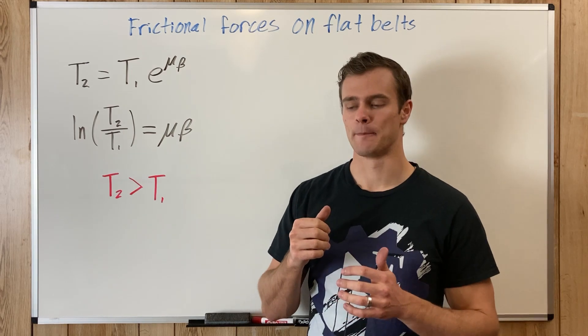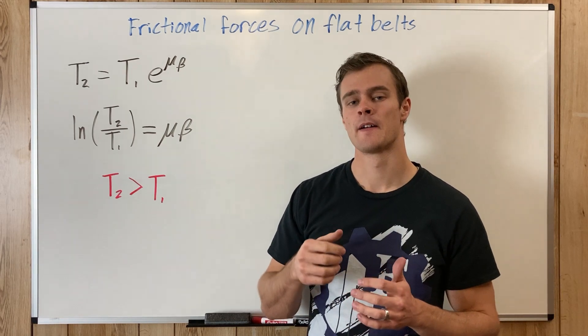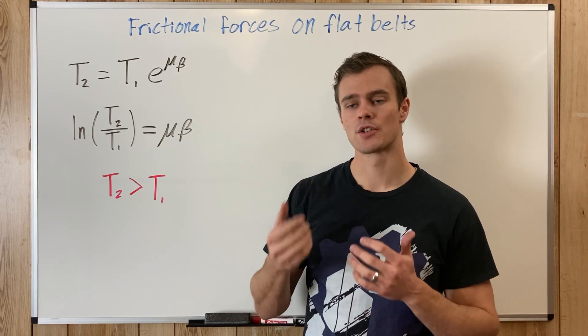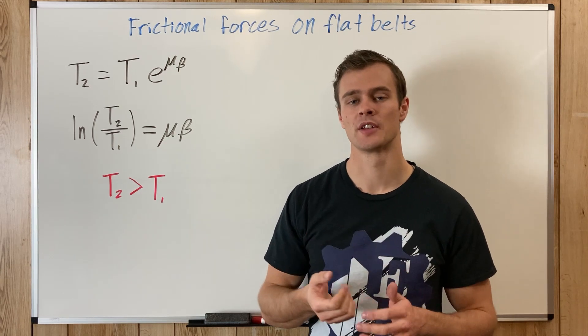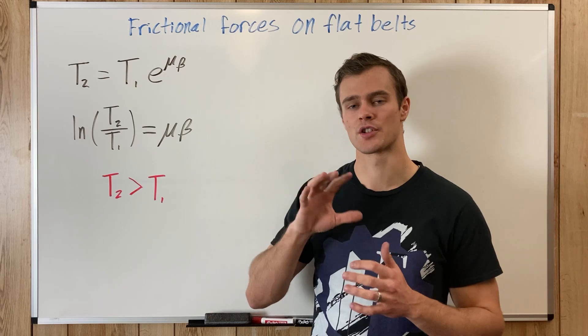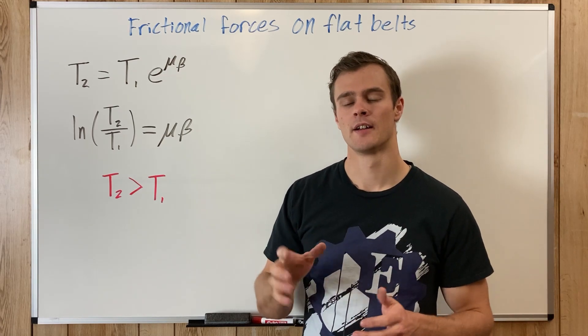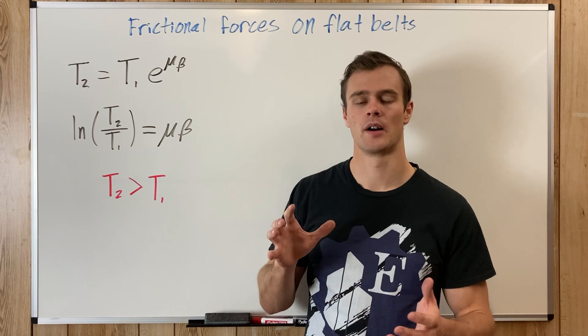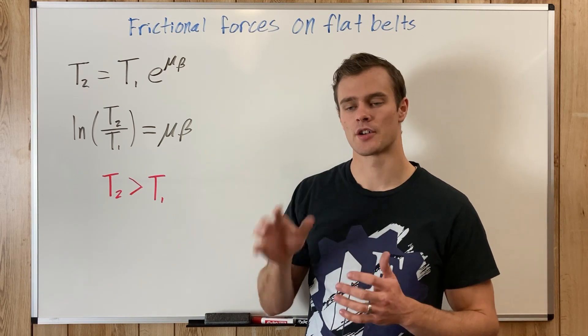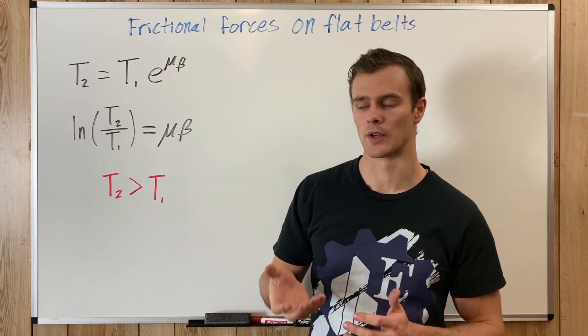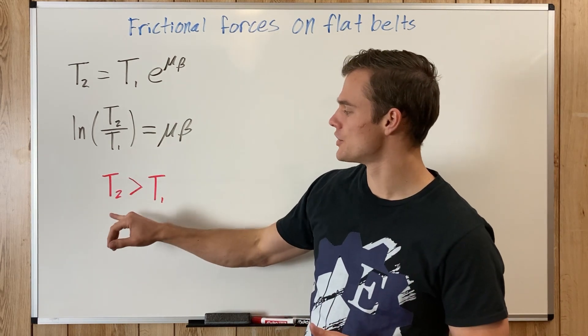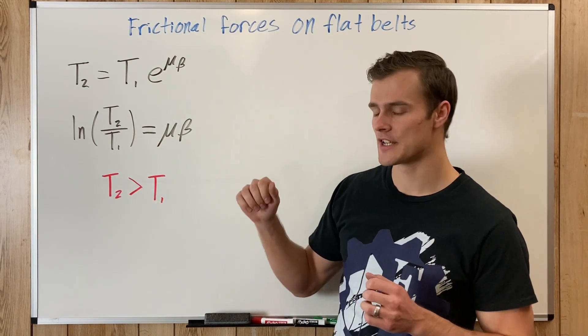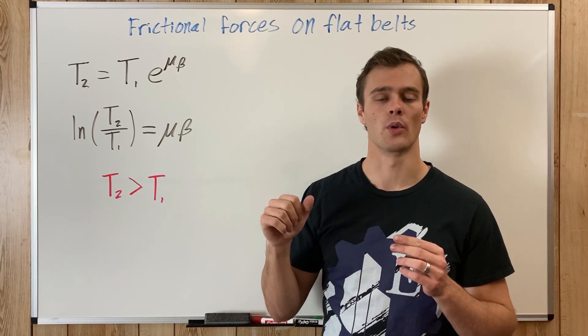To begin with, what this concept is, is frictional forces on belts, which includes ropes or cables going over circular objects such as a pulley, a wheel, a drum, just whatever that is circular. T2 and T1 are the tension in that rope or belt.